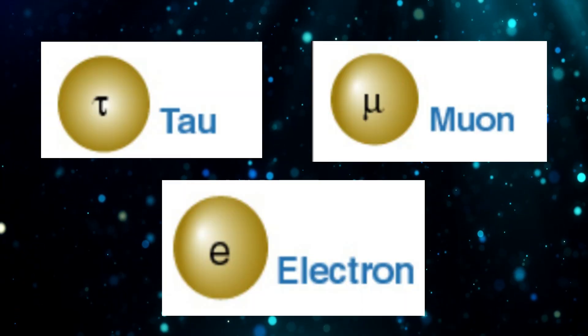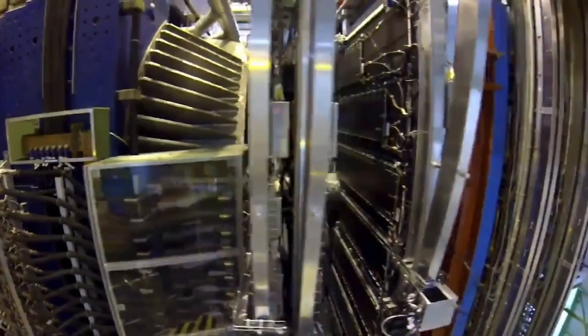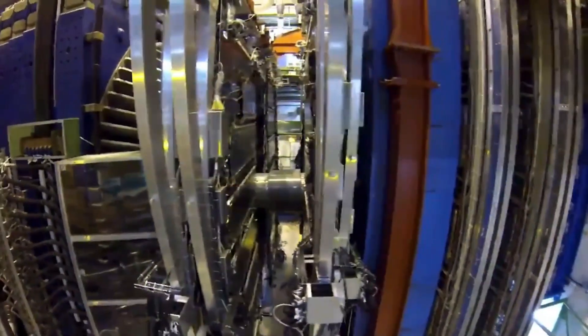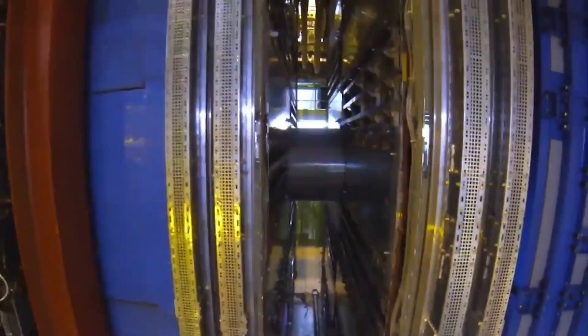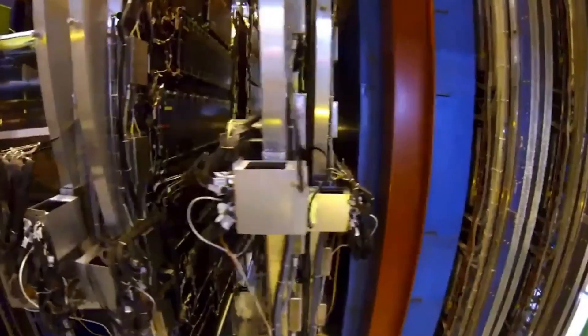The flavors are tau, muon, and electron. This result assured them that they had picked the right spot inside the enormous LHC ring to detect neutrinos, and also that their new detector was actually able to see them.